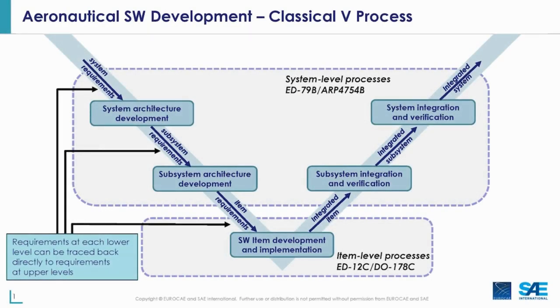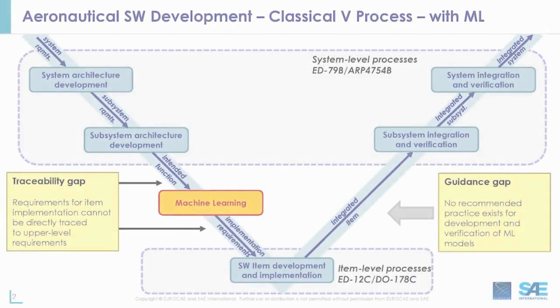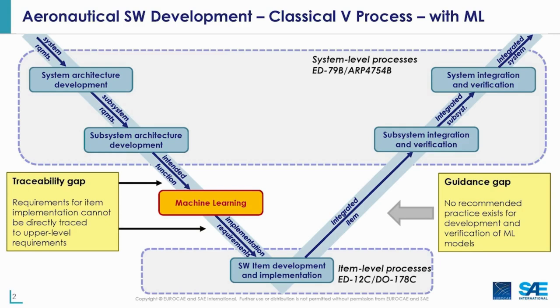It is intended to close the gap between the system development standards such as ARP4754 or ED79, and the item implementation standards such as DO-178 or ED12. In classical software development, requirements for item implementation can be traced directly back to system performance requirements. But when we want to implement an ML model, the specification for this implementation is generated by a machine via the data-driven learning process and cannot be immediately traced back to system level requirements.